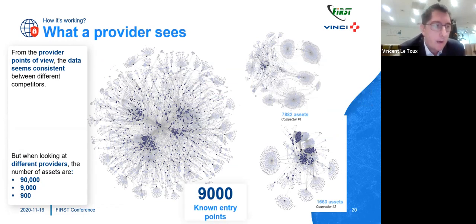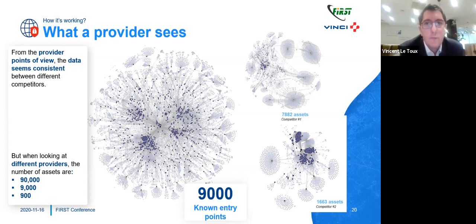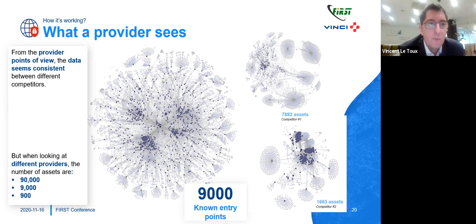I wanted to compare what providers see in order to understand if their views were consistent. I think the graphical view is consistent — you can see one centralized company, one decentralized, and a mixed one where you can find different clusters from merged companies. But when you compare the number of assets among different cyber rating companies, it's very different. For the same company, one provider showed 90,000 assets, another showed 9,000, and another only 900. We have to be very cautious about that — the explanation is that some providers didn't pick up all the DNS records.